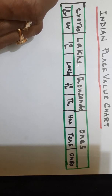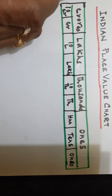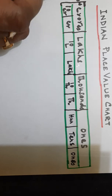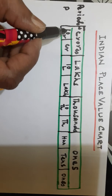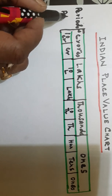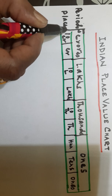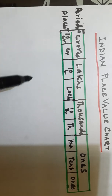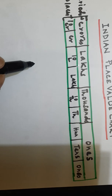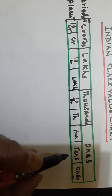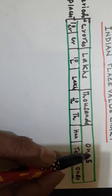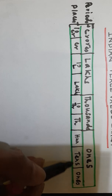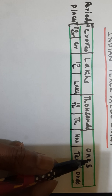So these are periods, and these are places. You can think of periods as a big house, and places are the small rooms in that house.